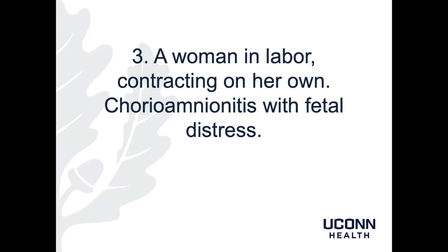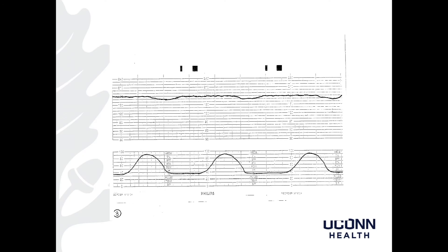Case 3 is a woman in labor contracting on her own. There is chorioamnionitis — an infection of the amniotic fluid and membranes — with fetal distress. My read: fetal heart rate baseline of 180s, minimal variability, no accelerations, positive recurrent late decelerations. That would make this Category 2 to 3. In the setting of chorioamnionitis there is usually a fever and maternal tachycardia. The baby will also have tachycardia, and these recurrent late decelerations tell us that the infection is starting to interfere with oxygen exchange through the placenta. This baby will either need to deliver vaginally very soon or a C-section would be required.